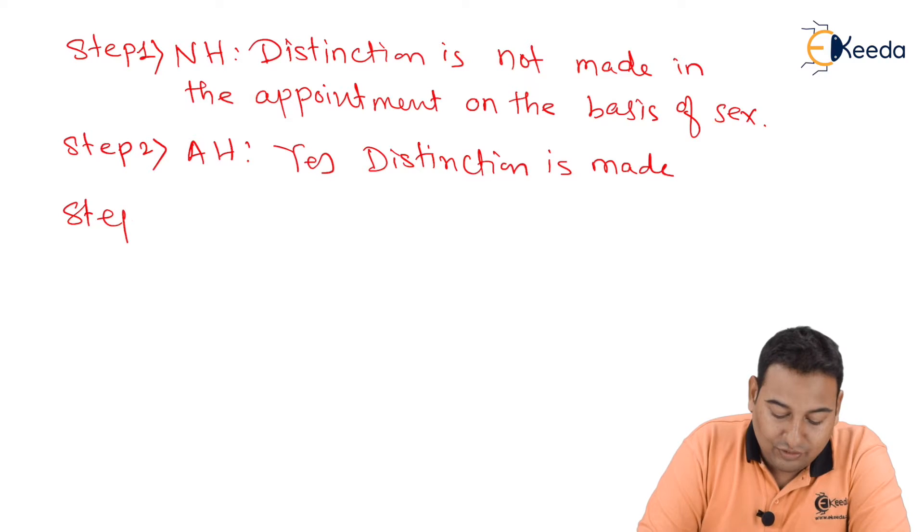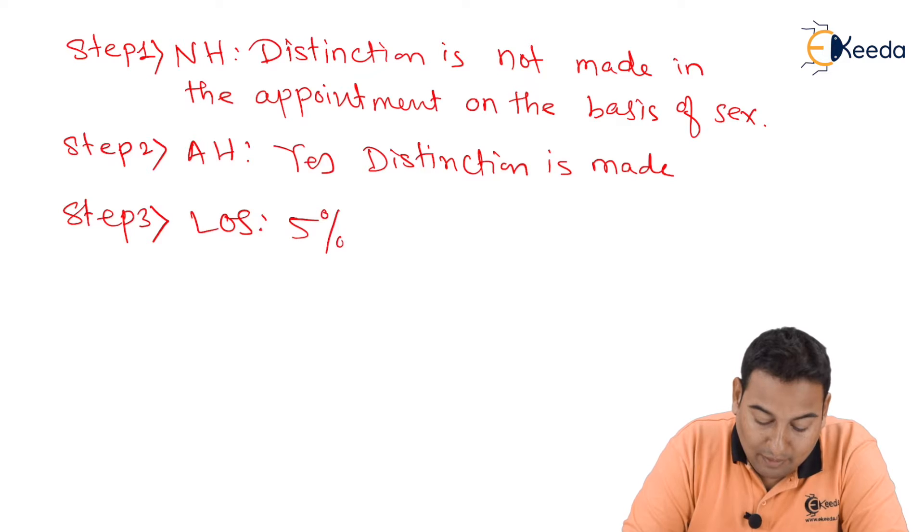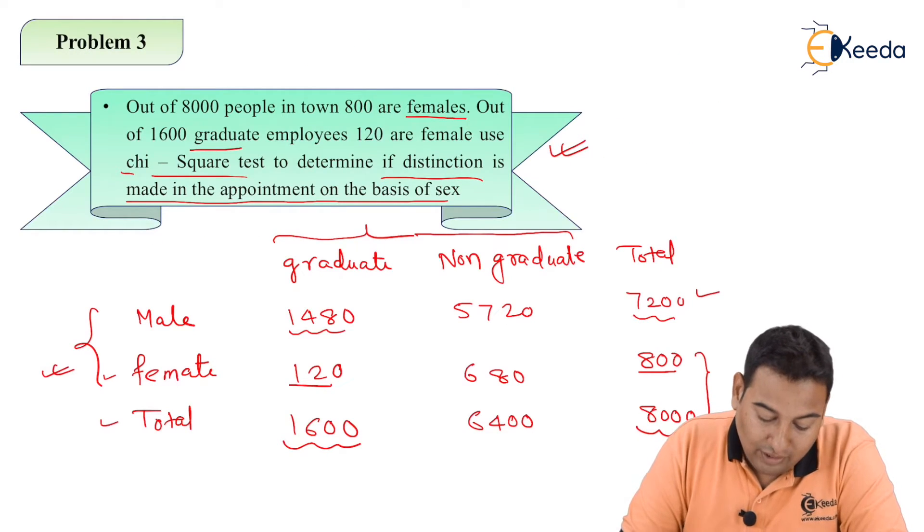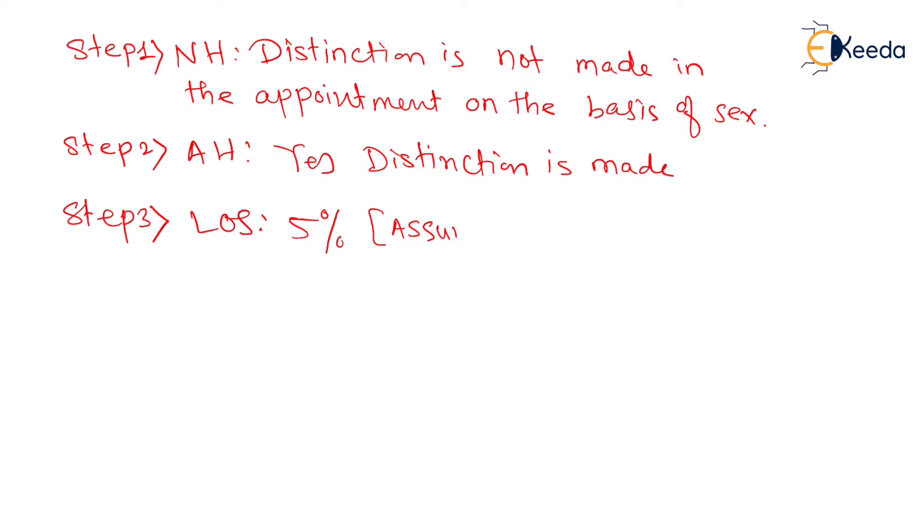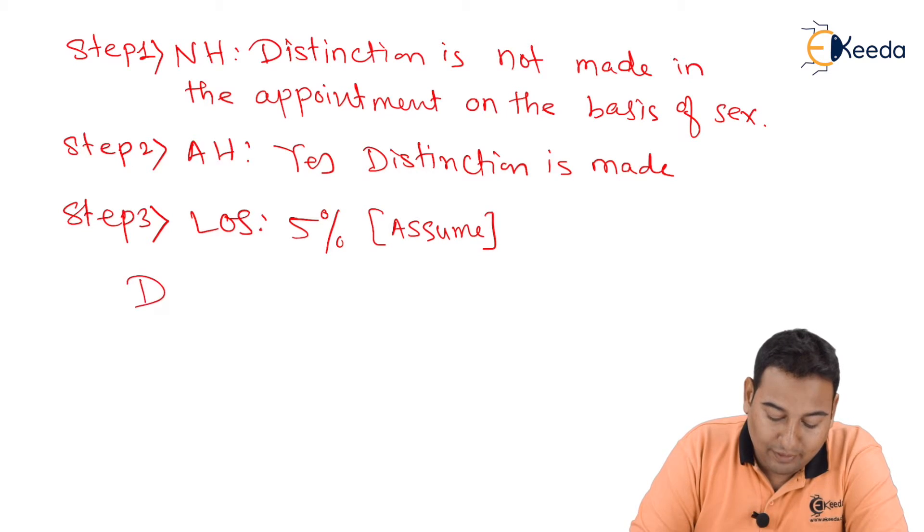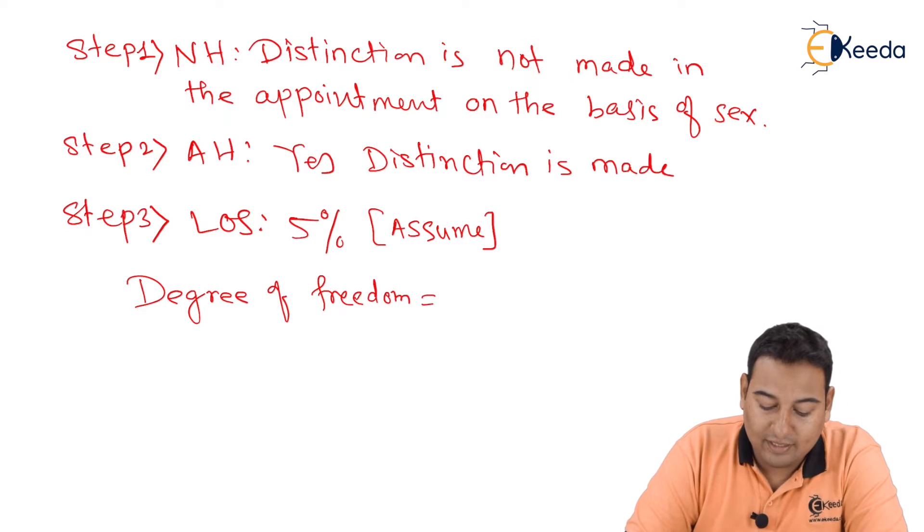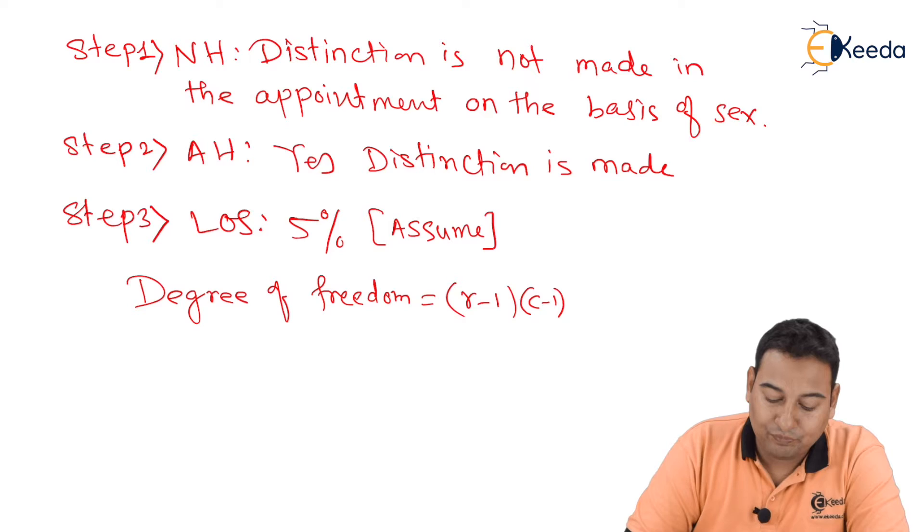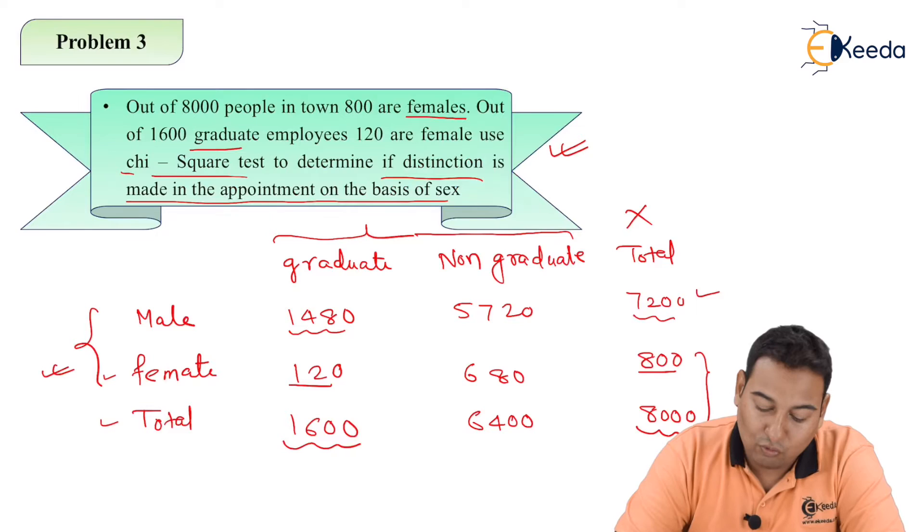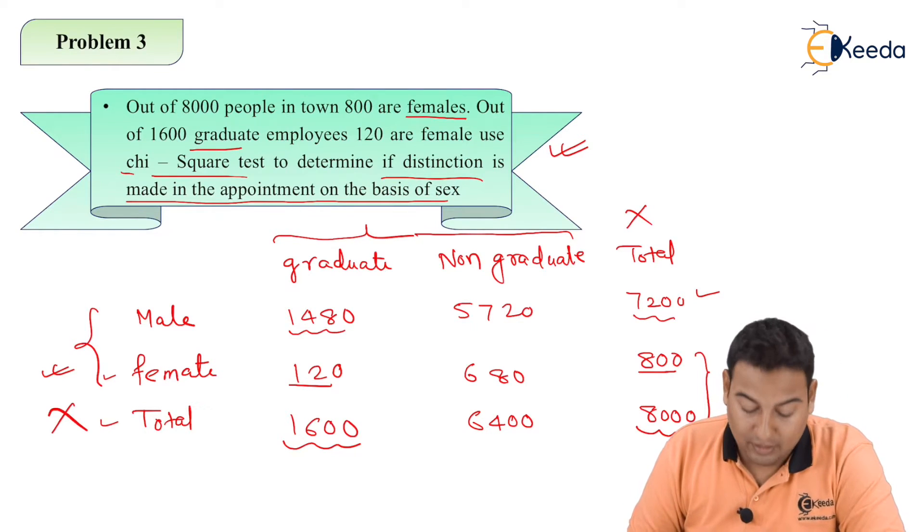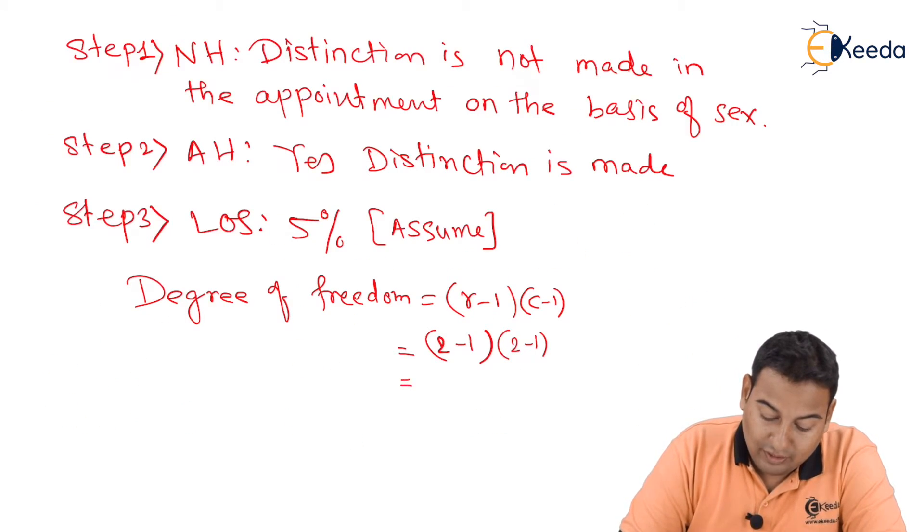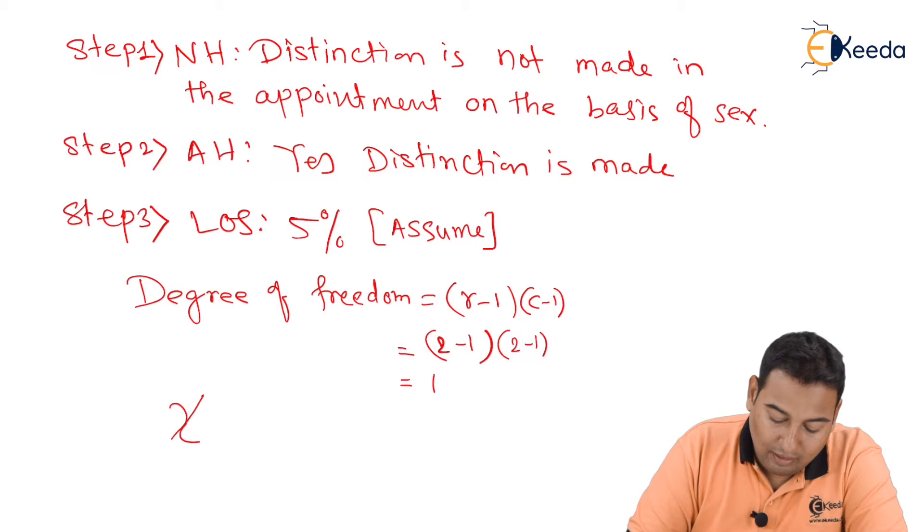Step number three is your level of significance, so here it is 5 percent. It is not given anywhere so we are assuming it. Next is your degree of freedom. The formula is (r minus 1) into (c minus 1). Here row is one and the same way column is one. We don't count total row and total column, left with two rows and two columns, so that is one. Chi square alpha is 3.84, this we got from the table.